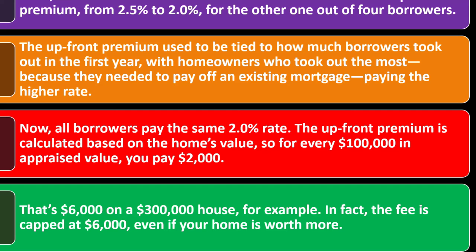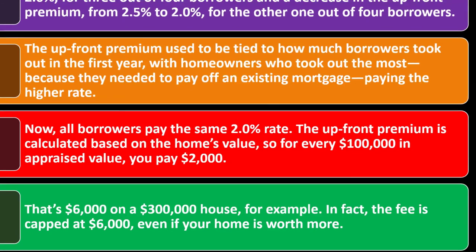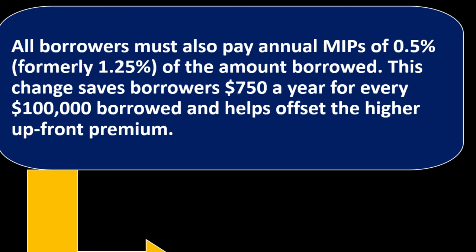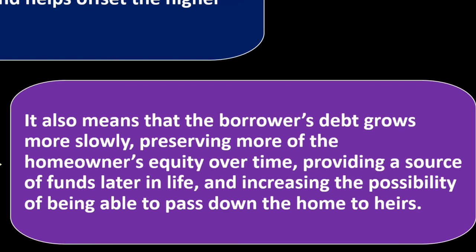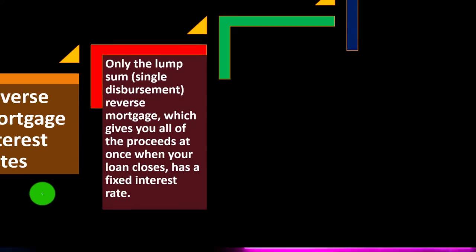All borrowers must also pay annual MIPs of 0.5%, formerly 1.25%, of the amount borrowed. This change saves borrowers $750 a year for every $100,000 borrowed and helps offset the higher upfront premium. It also means the borrower's debt grows more slowly, preserving more of the homeowner's equity over time, providing a source of funds later in life, and increasing the possibility of being able to pass down the home to heirs.